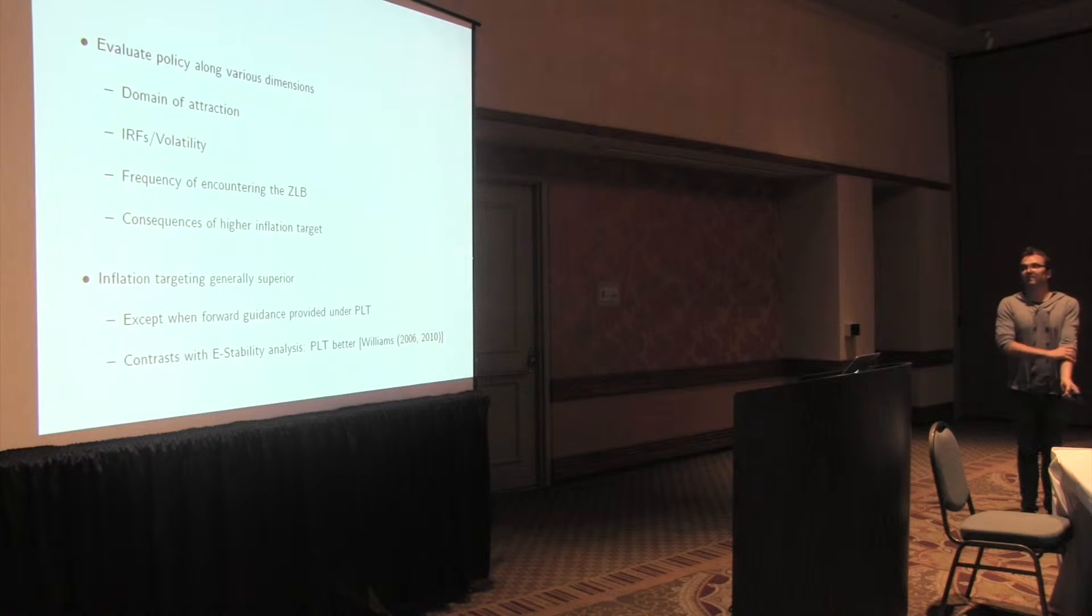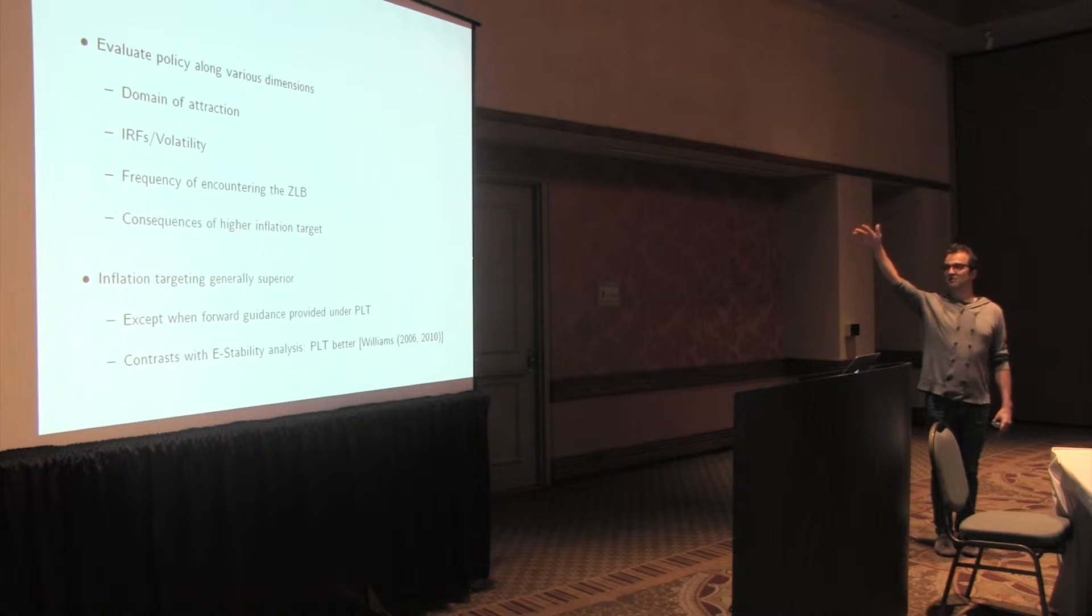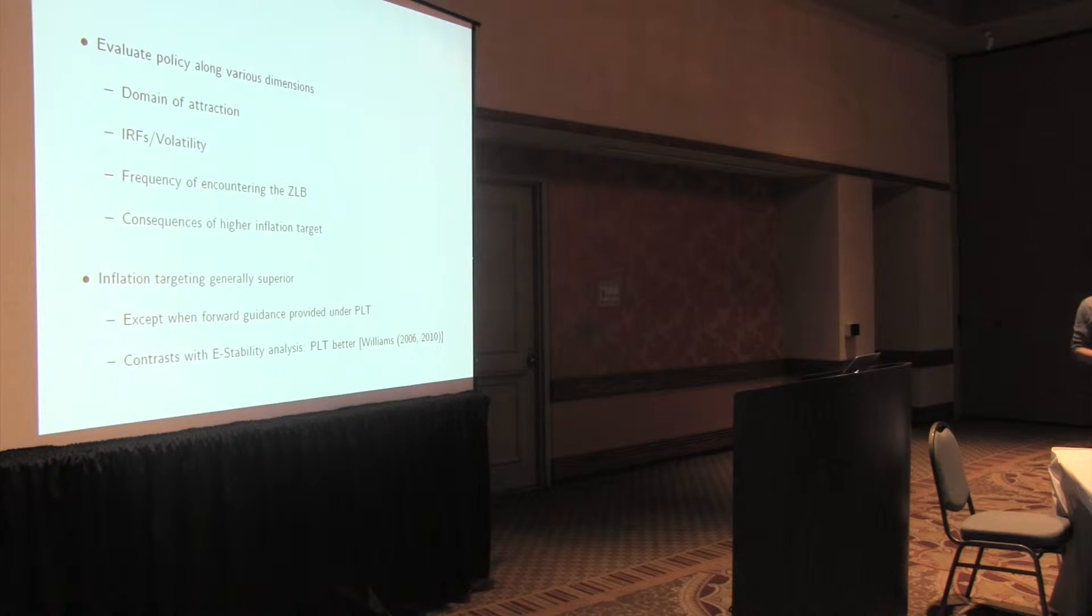So that's the idea of communication in the paper. The paper then does a lot of stuff. You can see Kaushik was rushing through it. They look at the pneumonia of attraction of these policies, impulse responses, volatility, frequency of counting from zero low bound, and also the consequences of the inflation target. So it's a pretty exhaustive analysis of the environment. The kind of conclusions are that, in general, inflation targeting is superior, or at least when there's absent forward guidance. And in the case that there is forward guidance, PLT does better. And what I'd like to see in the paper is kind of a bit more of a detailed discussion about what's going on here in terms of the basic mechanics.